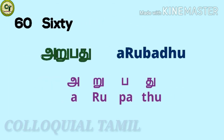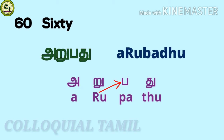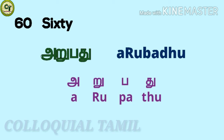For 60: a short vowel; ru — a short vowel letter; pa — a short vowel letter; together: 60.